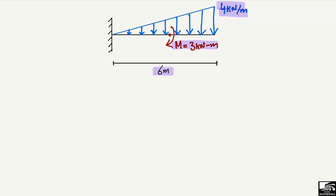To find out the support reactions, let's consider point A. This is a fixed support cantilever beam, so it will have the horizontal reaction RAX, it will also have the vertical reaction RAY, and it will also carry a moment, as it is a fixed support. A fixed support has the capability to take horizontal reaction, vertical reaction, and also a moment.